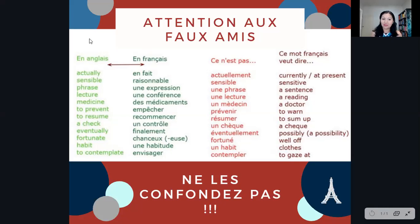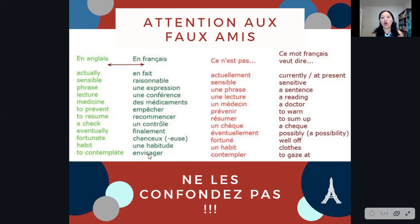Finally, en anglais, the word 'to contemplate' is not 'contempler.' 'Contempler' en français means to gaze at something — for example, je contemple les étoiles. To contemplate in English is the French 'envisager' — j'envisage les opportunités, j'envisage les options. You're taking them into consideration, you're contemplating them. With 'contempler,' you're just gazing at something, so the meaning is a little bit different.